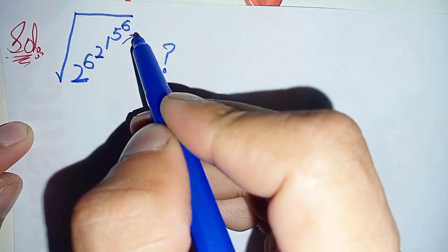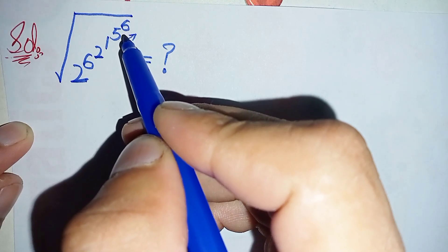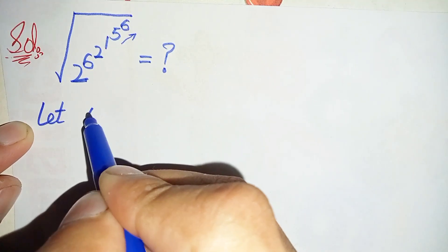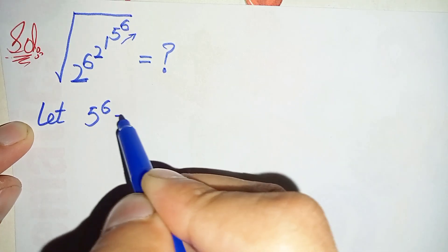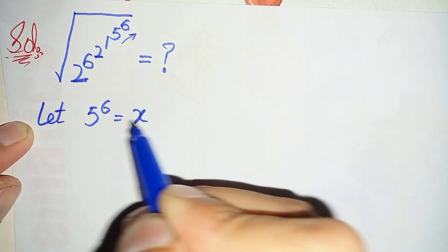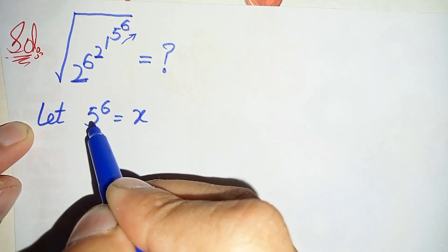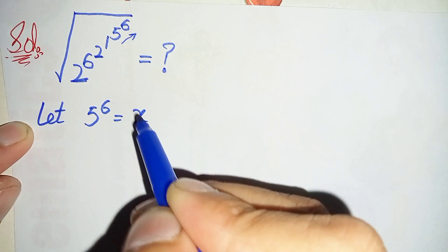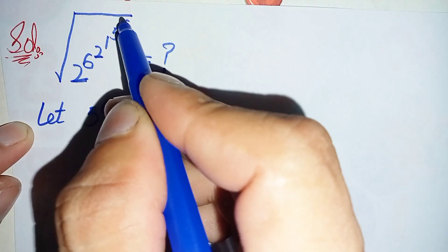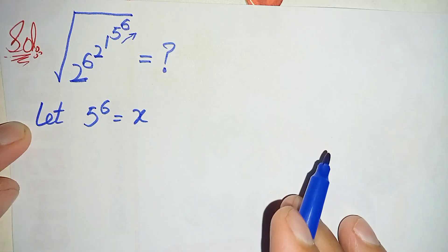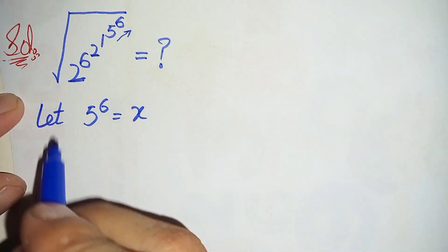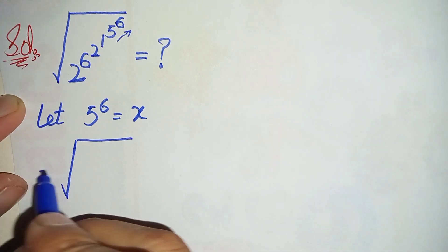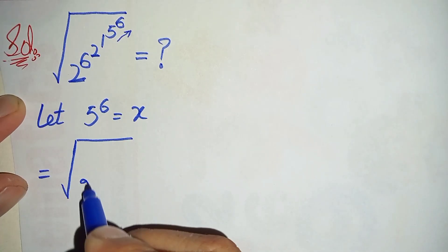First, we will solve 5 raised to power 6. Let us suppose 5 raised to power 6 is equal to x. If we multiply 5 six times it gives a number, so let us suppose that number is x. We will replace 5 raised to power 6 with x in the next step.